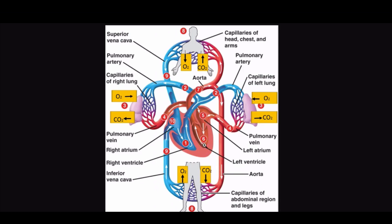From the left ventricle, it passes through the aortic valve, into the ascending aorta, and into the aortic arch. In the aortic arch, blood will leave and head to the upper portions of the body, such as the head, the chest, and the arms. The rest of the blood will continue down through the descending aorta, which will carry blood to the abdominal regions and the legs.